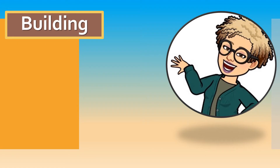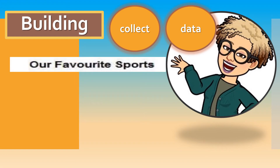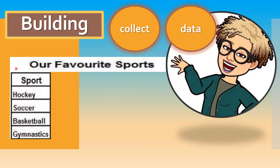An important skill we need to learn is building the tally graph. Can you remember what the description of the data is called? When building a graph, our purpose is to collect data, and that means we pay attention to our purpose. In considering this tally graph, we want to consider our favorite sports. The class has gotten together to decide what their favorite sports are, and in the first column they will list each sport. The children have decided on hockey, soccer, basketball, and gymnastics. So we have our title and we have our first column.